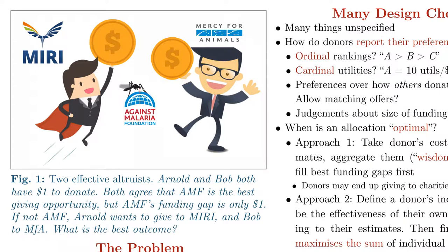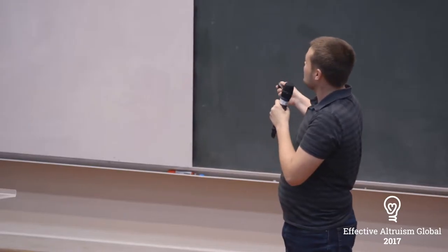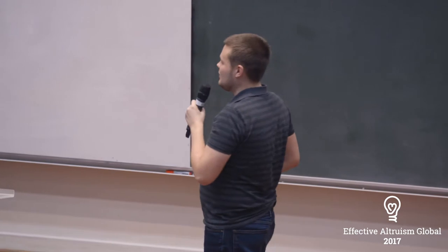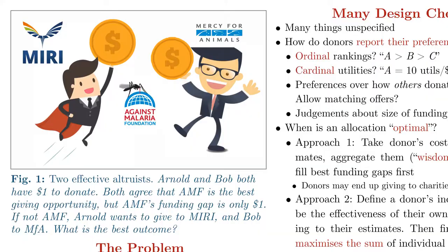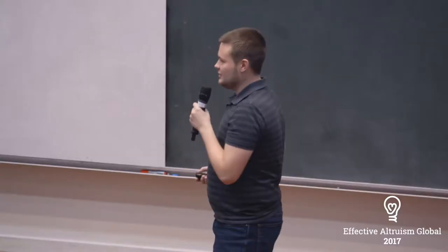Let me motivate the problem of donor coordination. Suppose we have two effective altruists, Arnold and Bob, and they both have a dollar to donate. They both agree that AMF is the best, most cost-effective charity, so they both want to give to AMF. Annoyingly, let's say AMF only has a funding gap of $1, so it can only use $1 effectively and the second dollar is completely wasted.